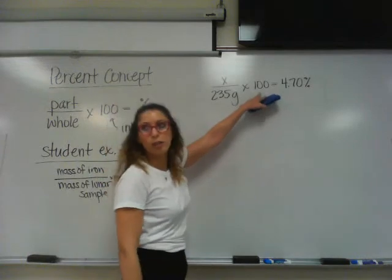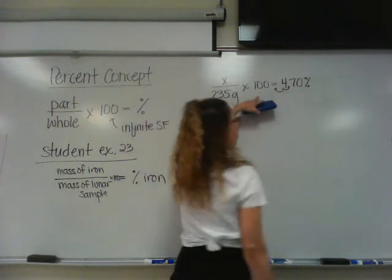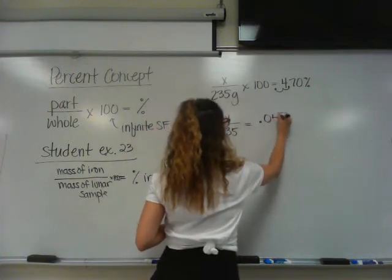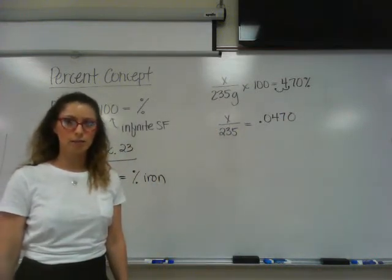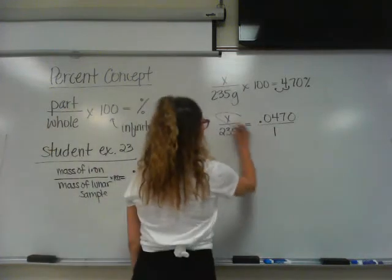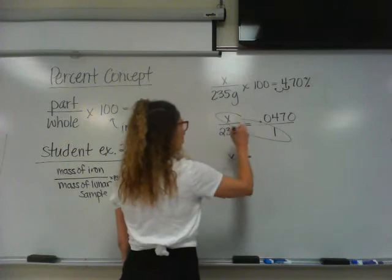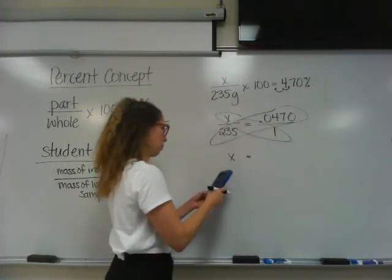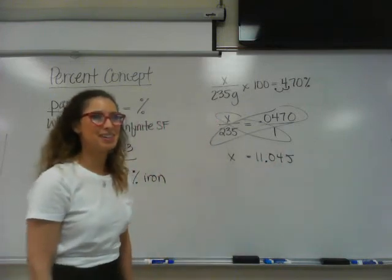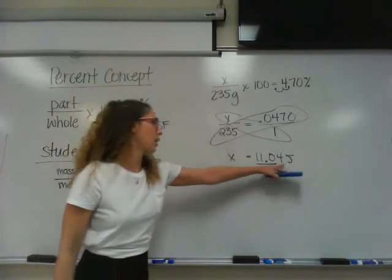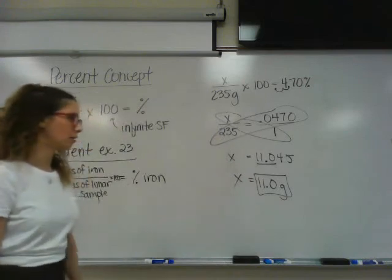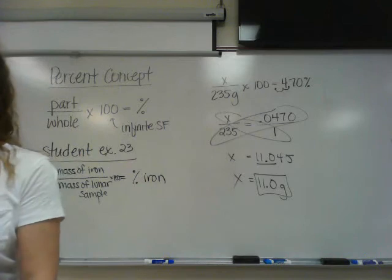To get rid of the 100, you need to take this decimal and move it to the left two places. And you're going to get x over 235 equals .0470. Does that make sense? Now, if you want to, you could just put this over 1 and you can cross multiply. What is x times 1? x, 1x, or just x. What's 235 times .0470? 11.045. How many sig figs do I want in my answer? Three. So we're going to underline the 11.0. If that's a four, does that zero round up? No. So it's 11.0 grams. You are done. That is the mass of iron.